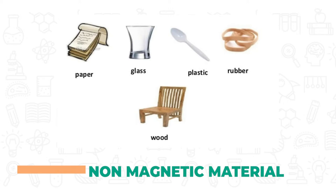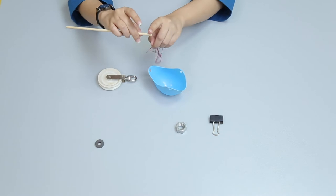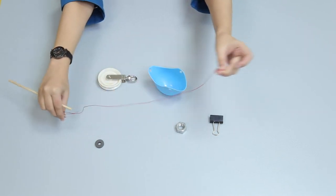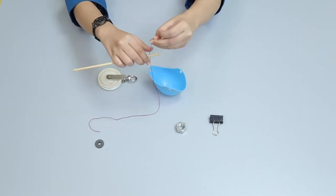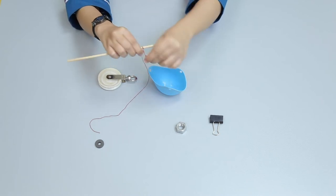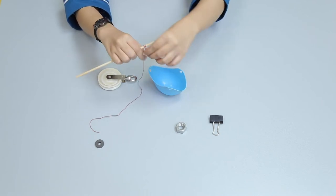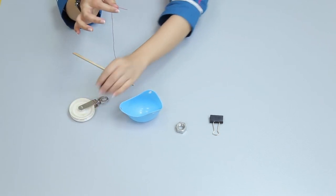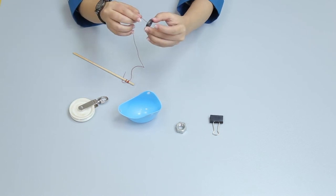Non-magnetic materials, for example plastic. Take a wooden rod and a magnet. Bind the magnet with the wooden rod using thread.